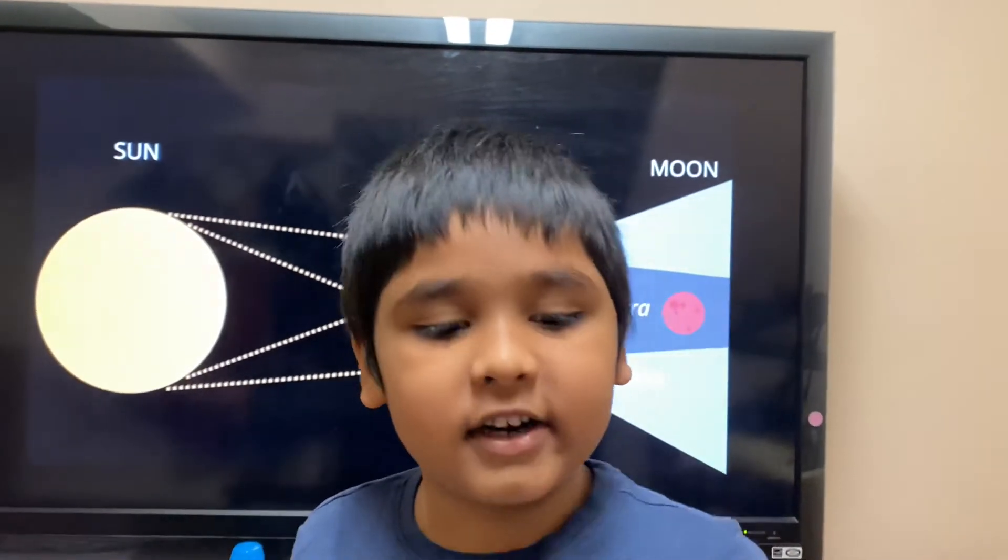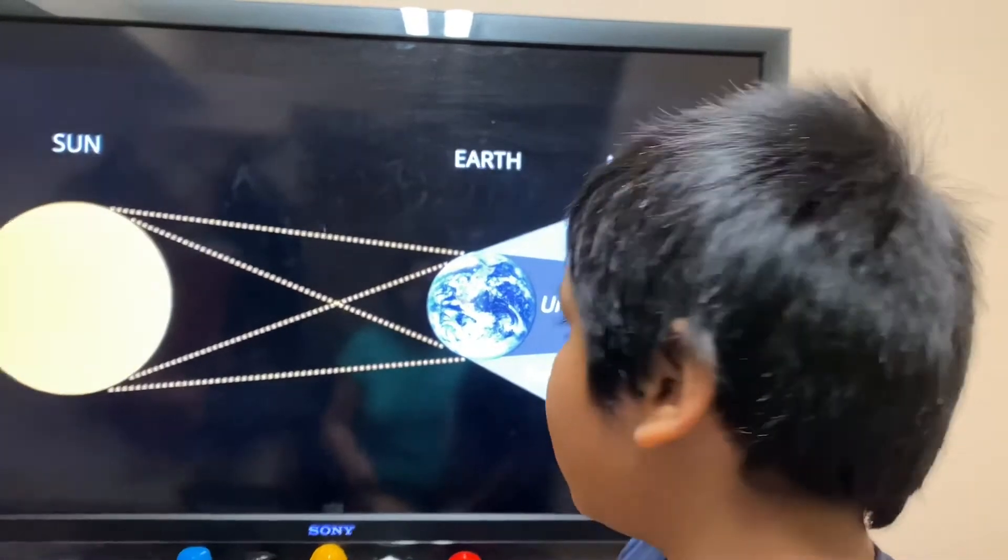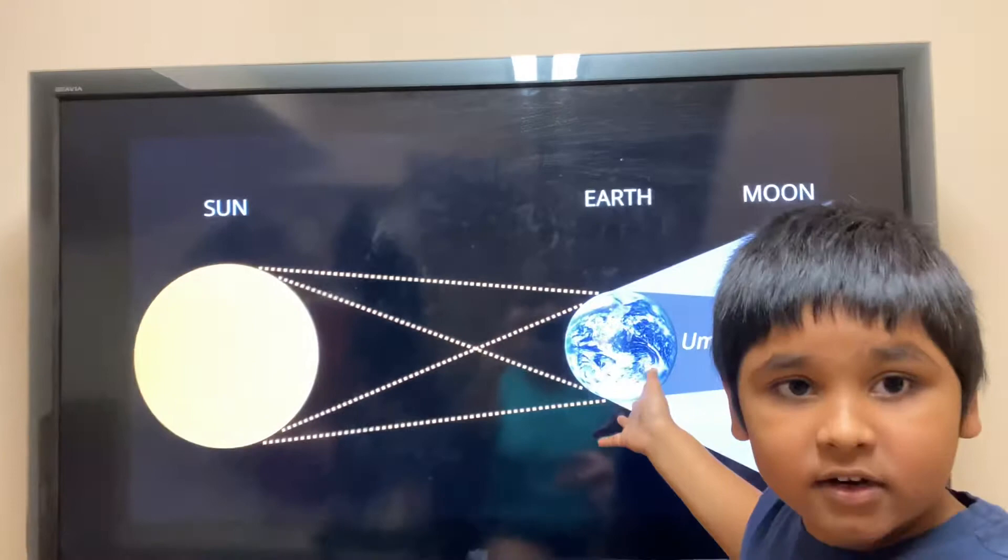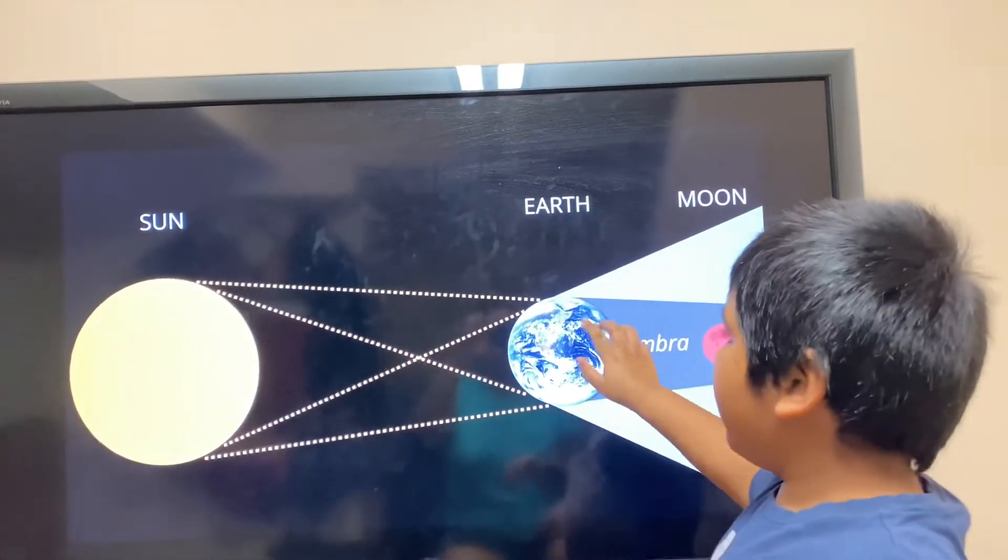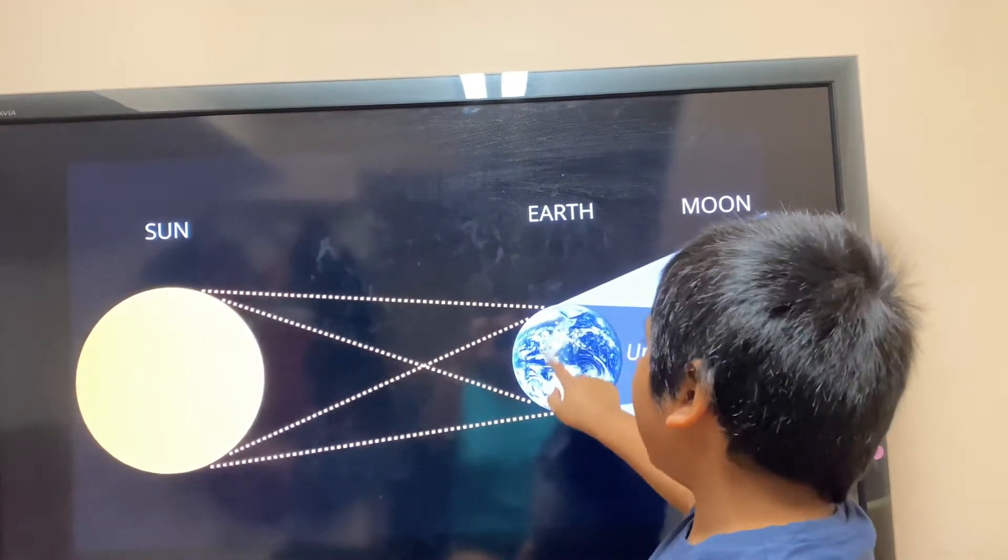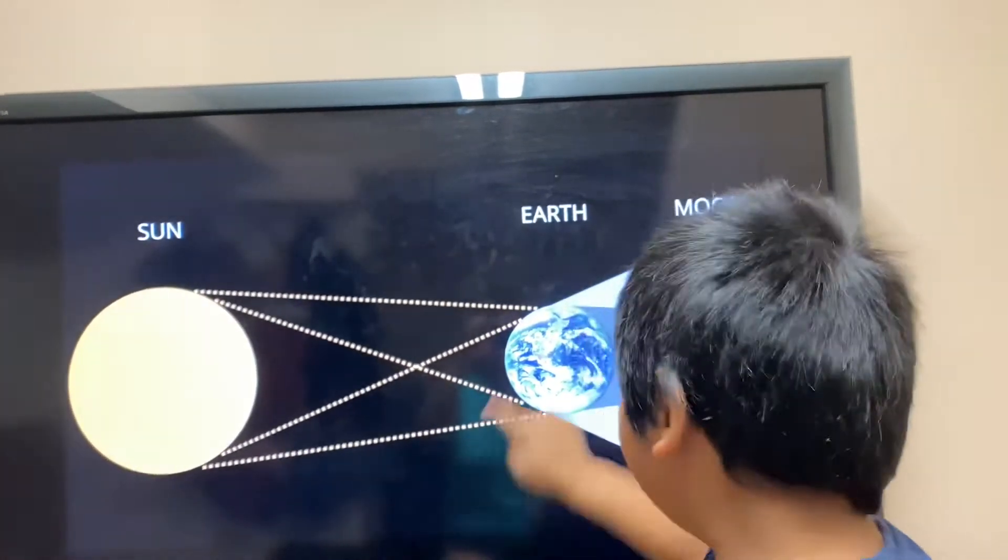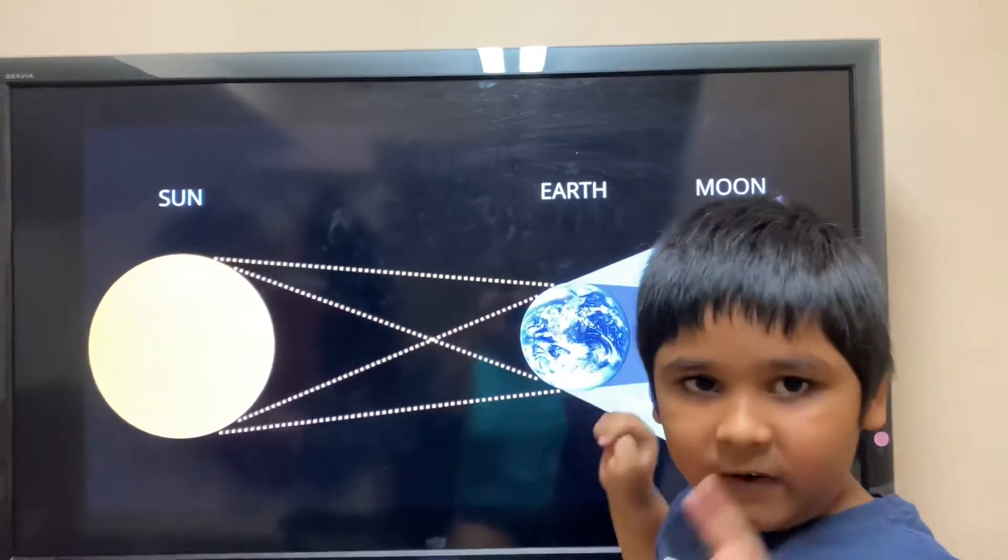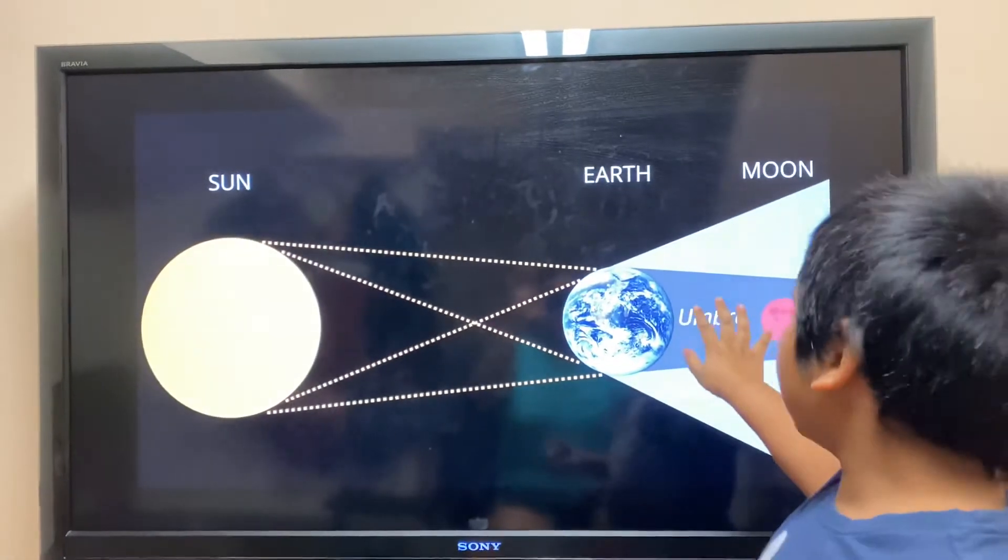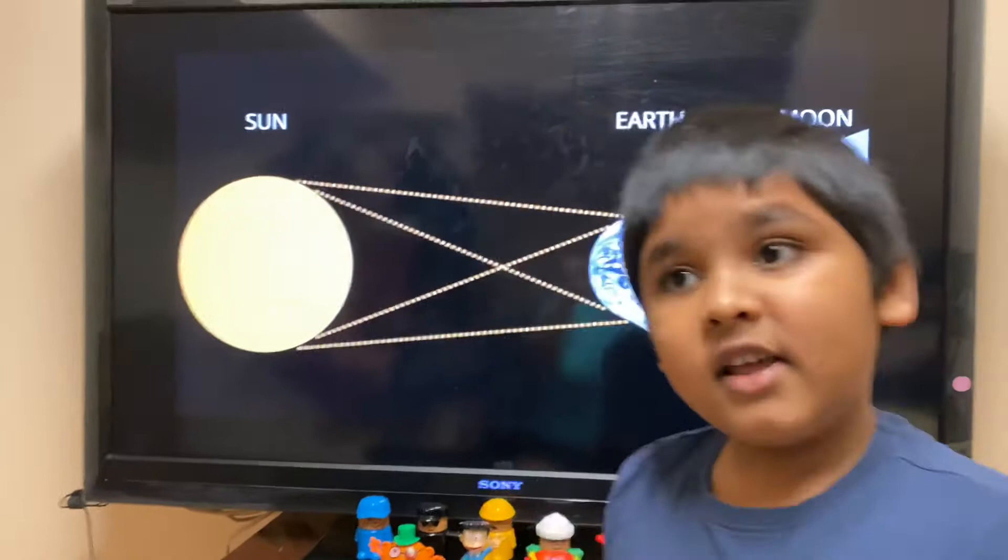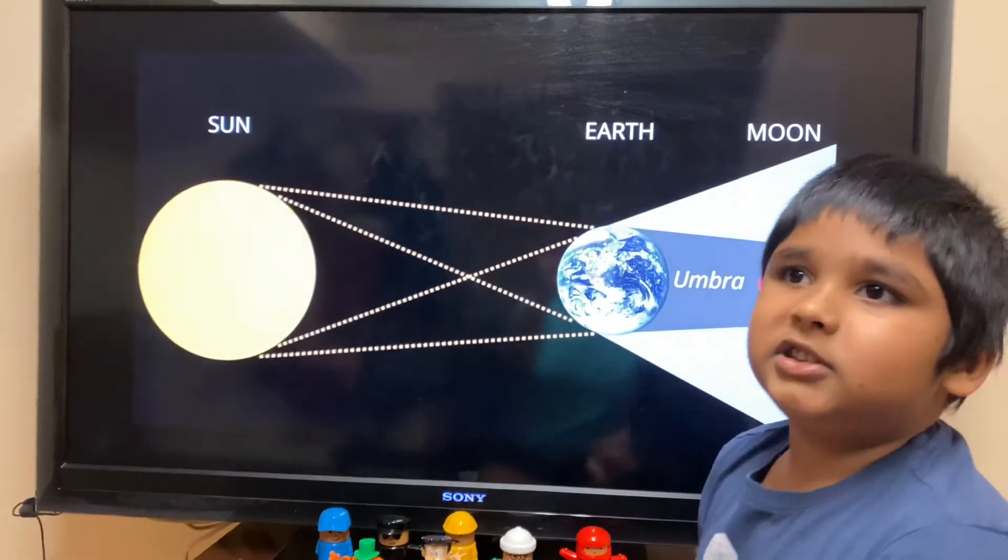That's not the only color it could change. It could change into yellow, brown, and some other colors. So when a part of the Earth is in light, we can't see a lunar eclipse. If it's in the shadow, we can see it. But the moon is not completely dark. It gets some sunlight.